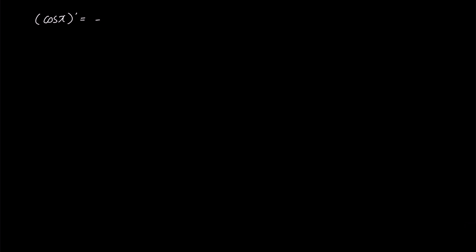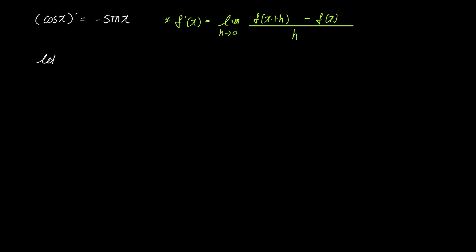We'll prove why the derivative of cosine x is negative sine x, and to do that, we'll use the limit definition of the derivative shown here in green. Let's first define f of x as cosine x. Then f of x plus h becomes cosine x plus h. And to expand it, let's briefly review the compound angle formula for cosine.